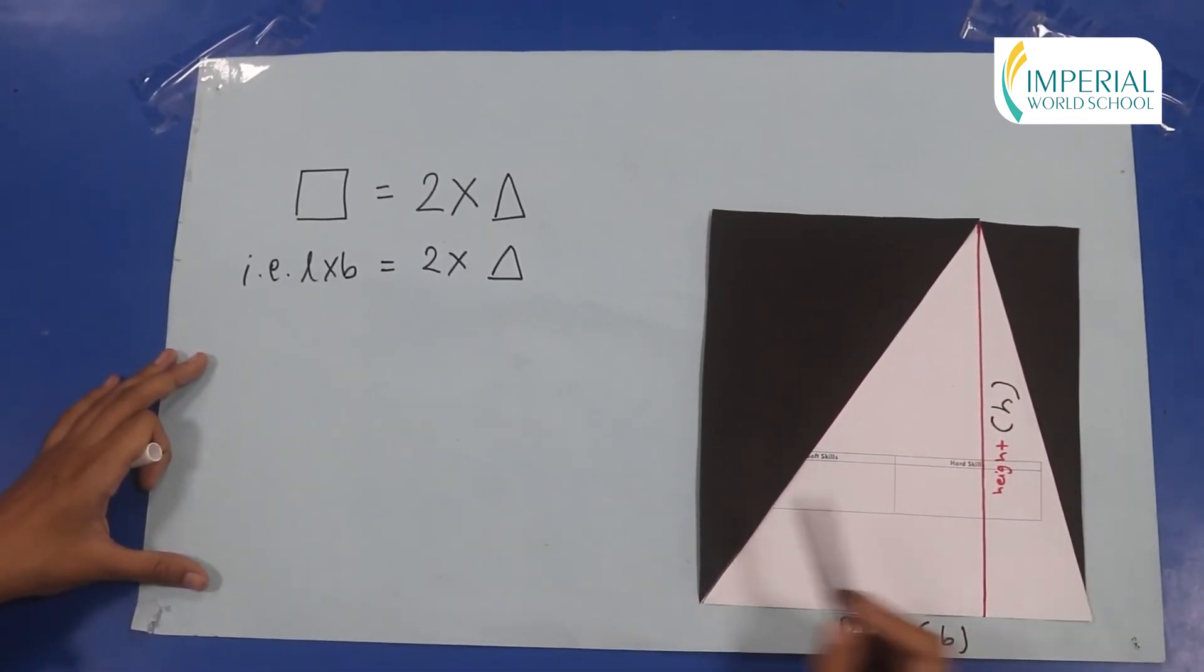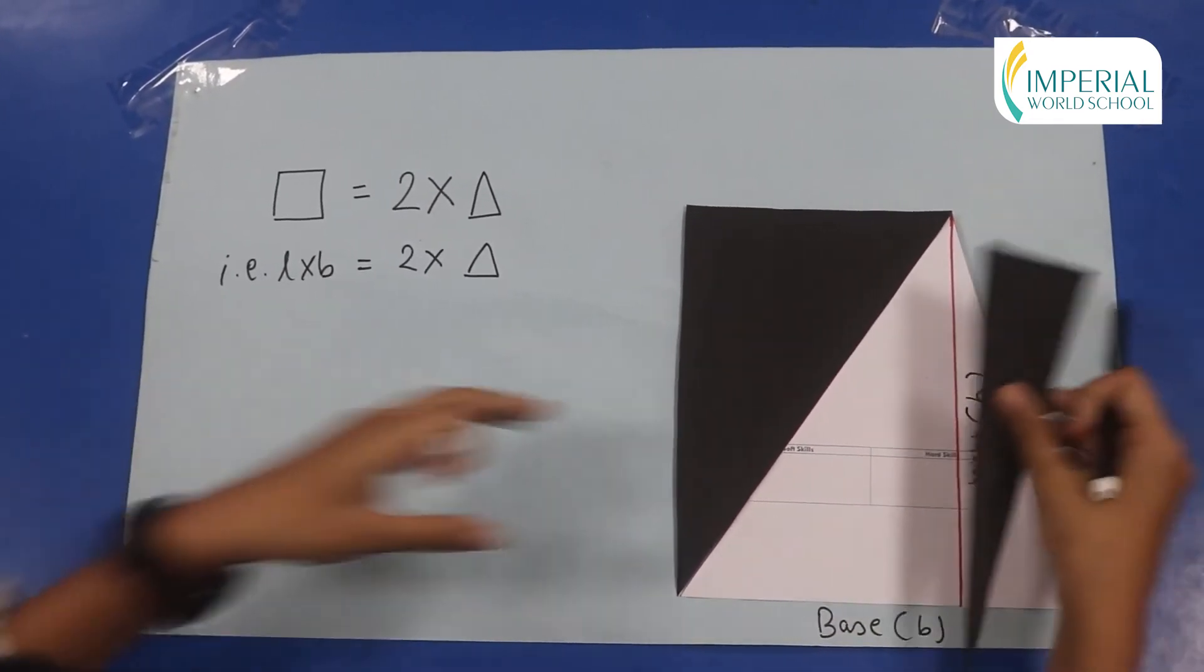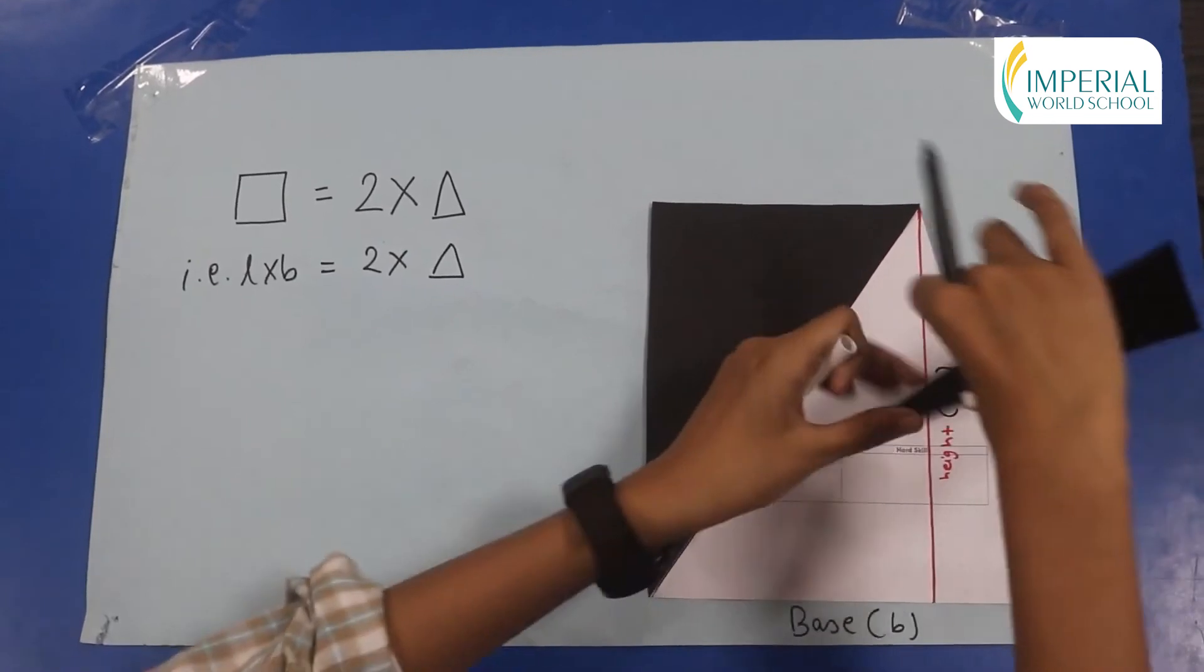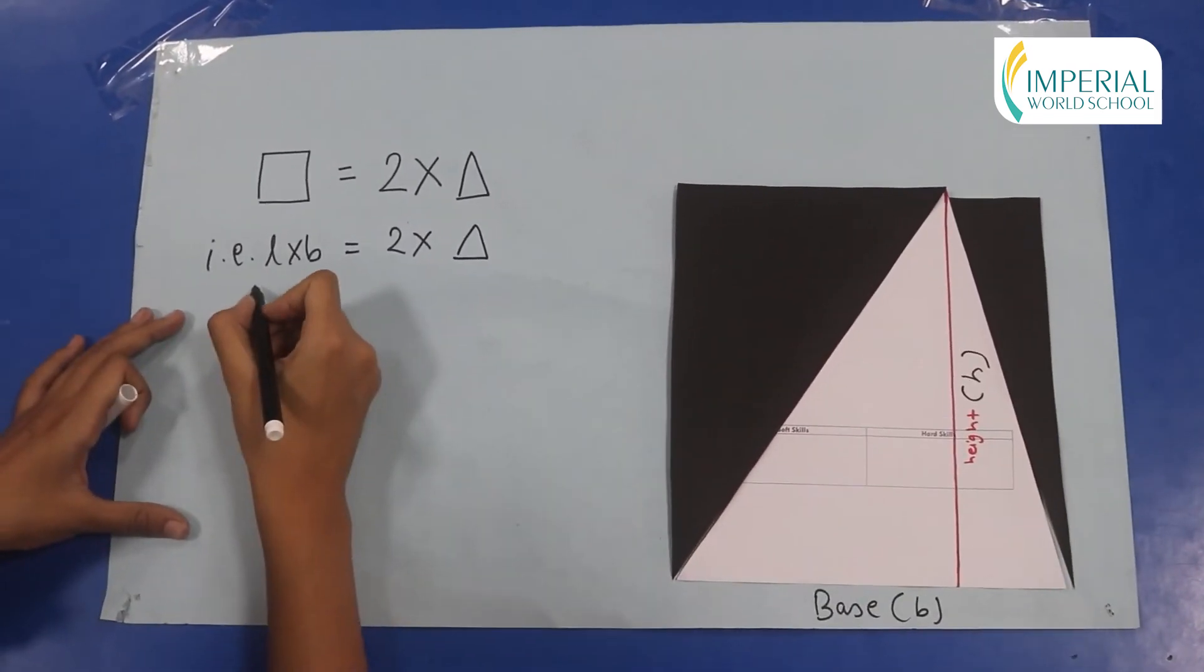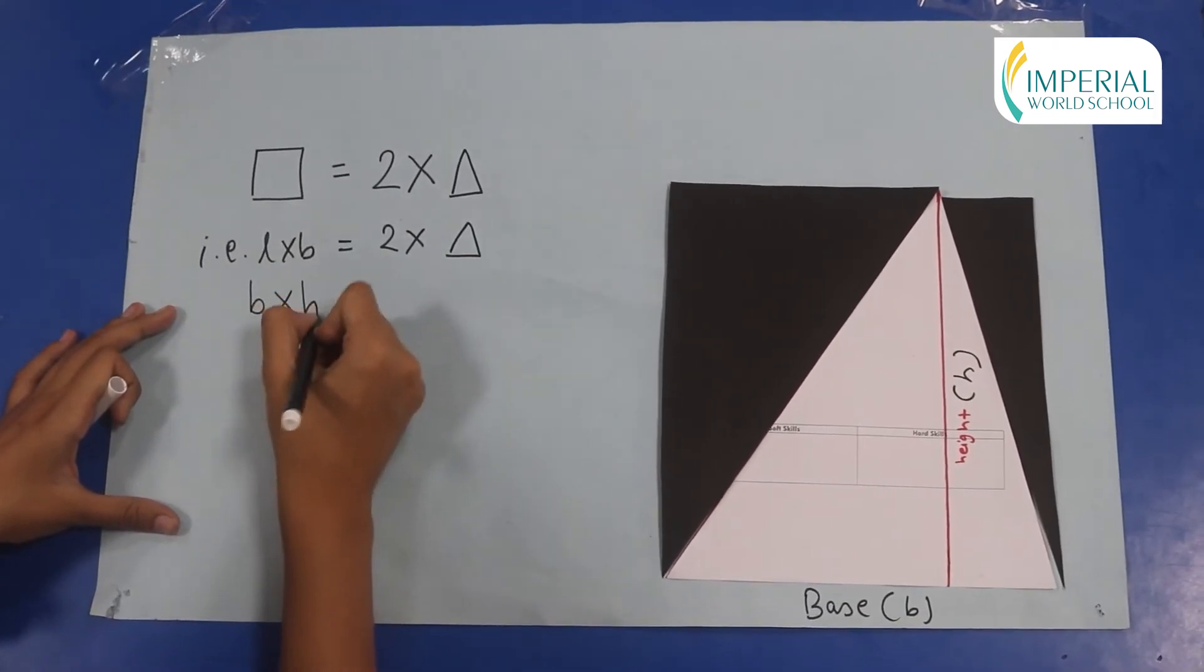And now since these two triangles are congruent, this height and this breadth will be equal which is why this will be base into height.